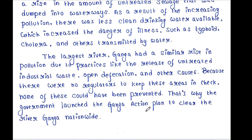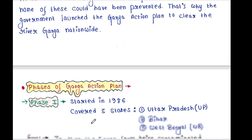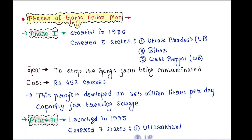Because there were no regulators to keep these areas in check, none of this could have been prevented. That is why the government launched the Ganga Action Plan, or GAP, to clean the river Ganga nationwide.